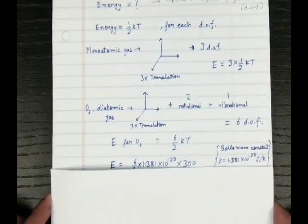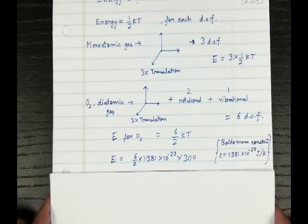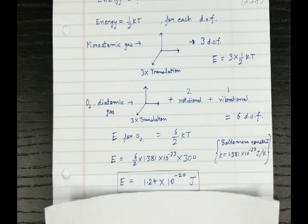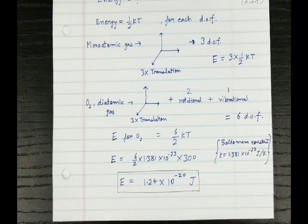We plug in all the values, making sure that all the values are in SI units, and we see that the energy for our Oxygen diatomic gas is 1.24 times 10 raised to the power minus 20 joules.